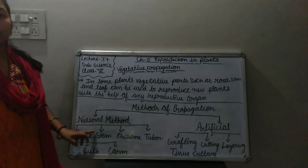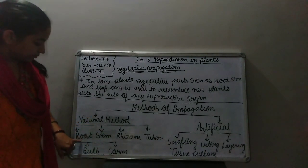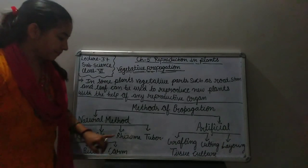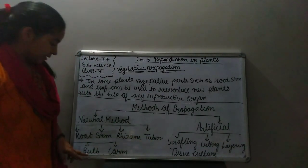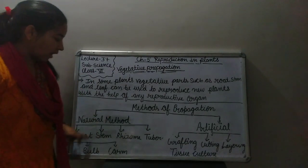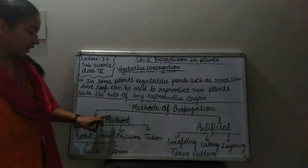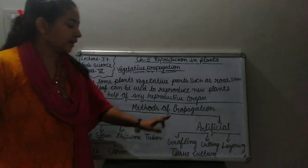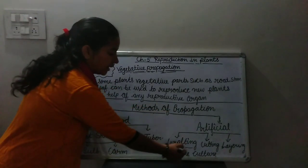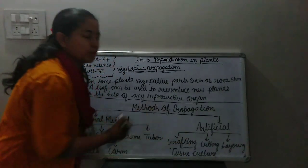In natural methods we learn about propagation done by roots, stem, rhizome, tuber, bulb, and corm. These are all the vegetative organs involved in natural methods. In artificial methods there are grafting, cutting, layering, and tissue culture.